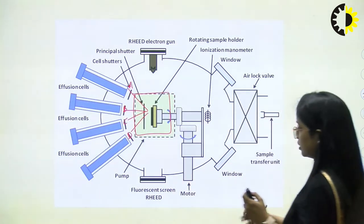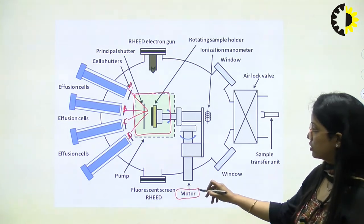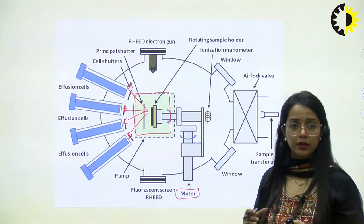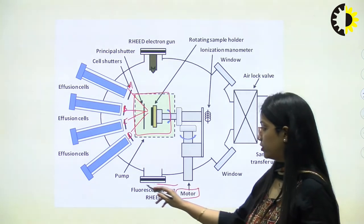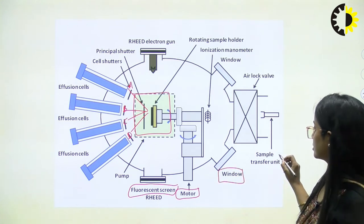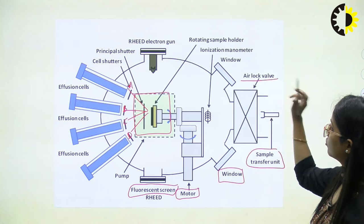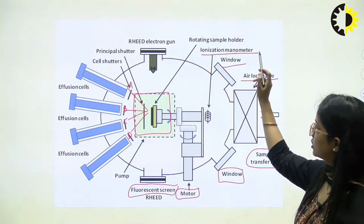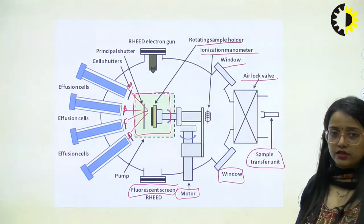This setup has a motor that accounts for rotation and proper alignment of the holder. Here we have a fluorescent screen, a window, a sample transfer unit, an air lock valve, an ionization manometer, another window, a rotating sample, and guns on the other side.